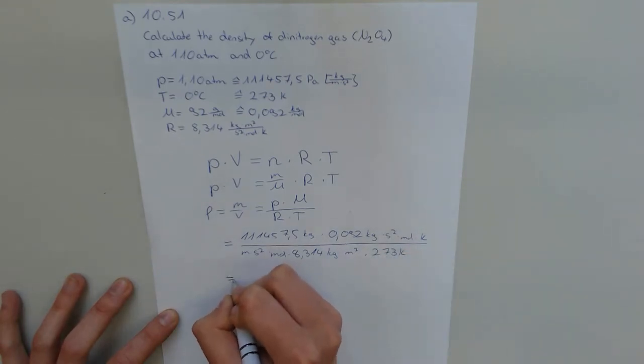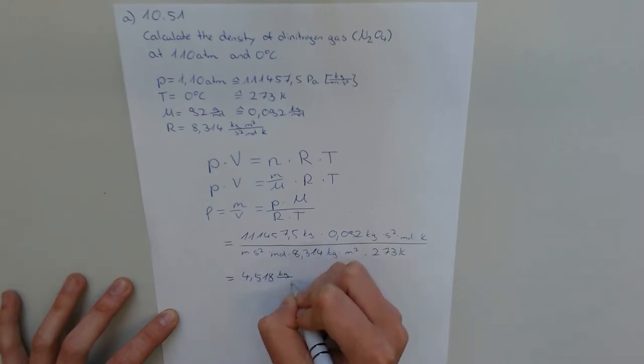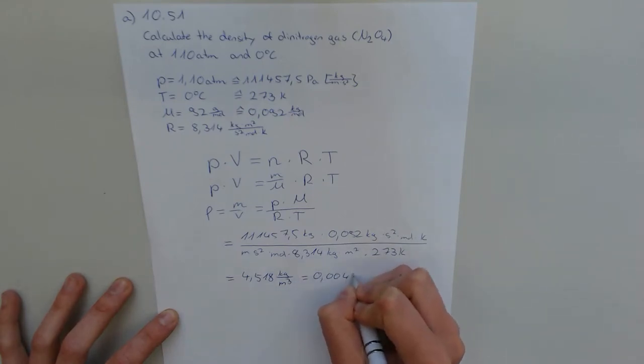And we just type it in our calculator. And we got 4.518 kilogram per cubic meter which is 0.0045 gram per cubic centimeter.